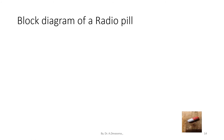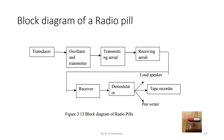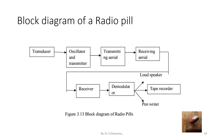The block diagram of a radio pill shows a transducer connected to an oscillator and a transmitter. The transmitter is connected to the transmitting area and the output from the transmitting area is connected to the receiving area. The receiving area is connected to the receiver, which in turn is connected to the demodulator. There are three possible outputs: a loudspeaker, a pen writer, or a tape recorder.